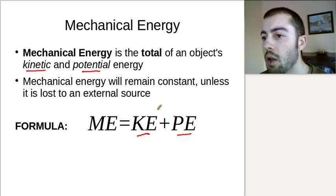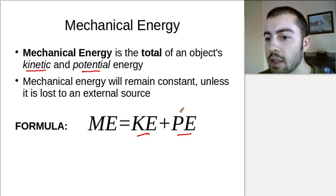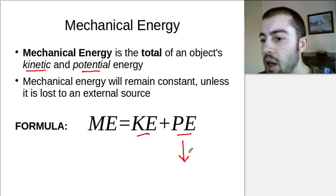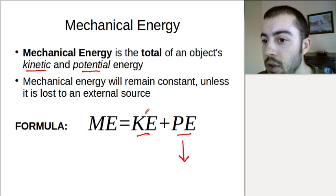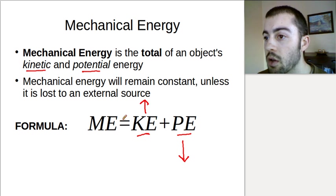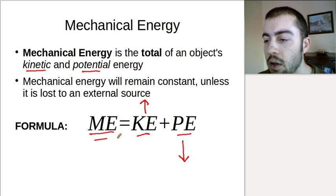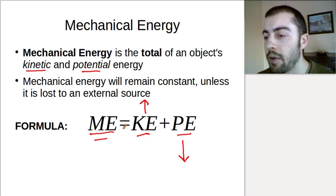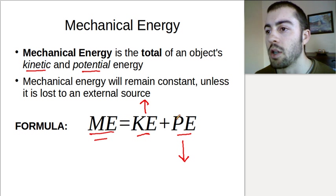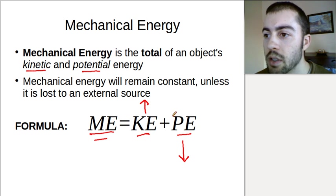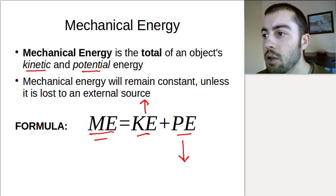If we think about this in terms of the law of conservation of energy, let's say we have an object that rolls down a hill. Because it's decreasing its height, it would be losing potential energy. In that case, we would know the kinetic energy has to go up because the mechanical energy is going to be conserved. So if one of these goes up, the other has to go down to keep the mechanical energy at a constant value. Kinetic energy and potential energy are inverses — if one goes up, the other goes down.